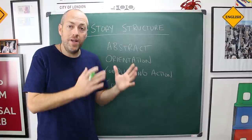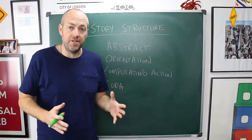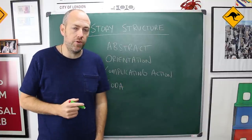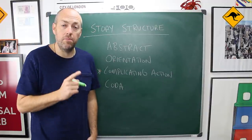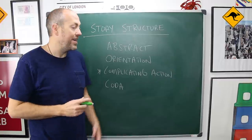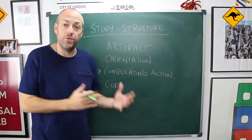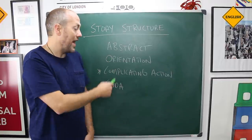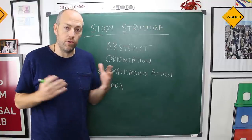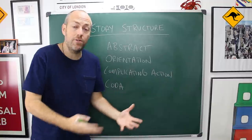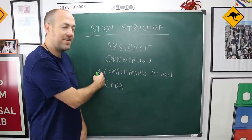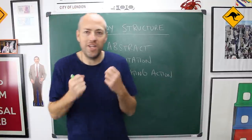Now, normally we only use the historical present in one part of the story structure. And that is here during the complicating action. It's very unusual to use the historical present in the abstract or orientation or coda. And now I'm going to show you how to use the historical present here to tell a really great story.